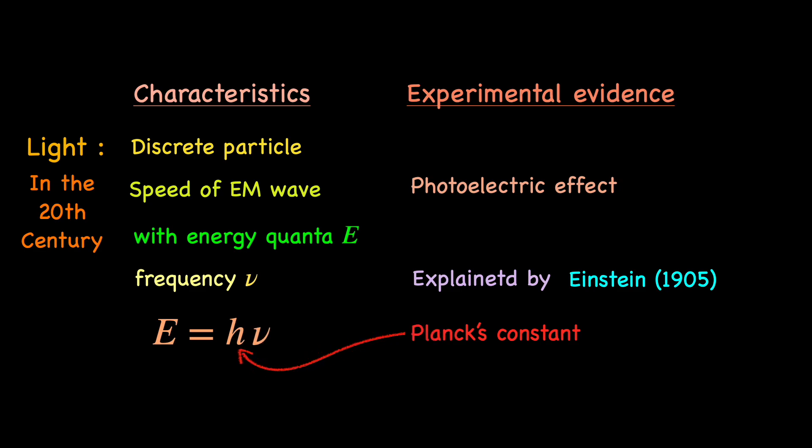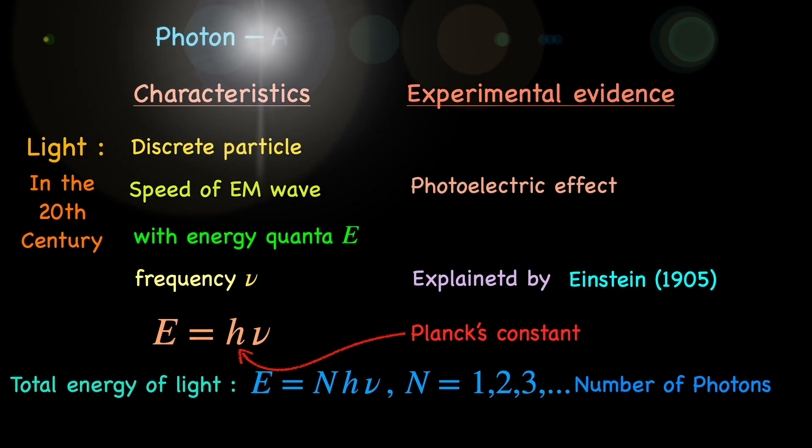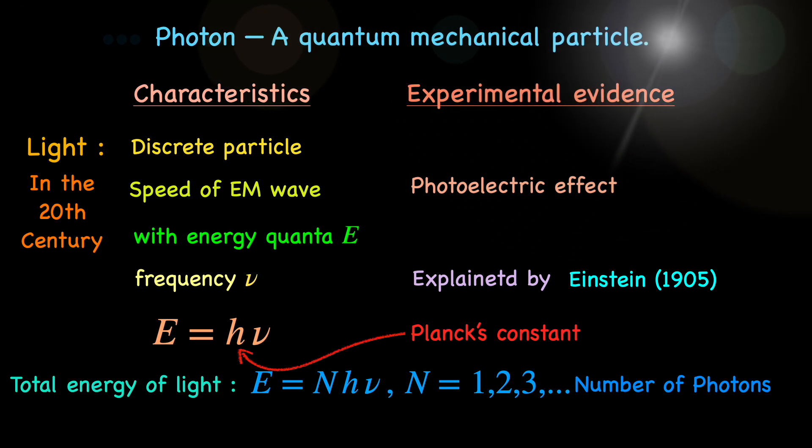This relation says light beam of a given frequency nu can only have energy in integer multiples of h nu, that is let's say 29 h nu if the beam happens to have 29 photons but not 29 and a half h nu. This makes photon energy discrete and quantum mechanical in nature.